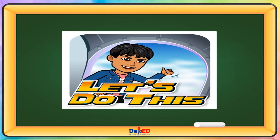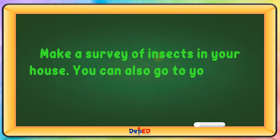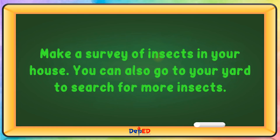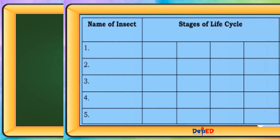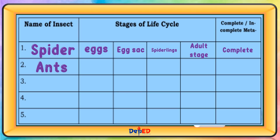Let's do this! Make a survey of insects in your house. You can also go to your yard to search for more insects. Name of insect: Spider. Stages of life cycle: eggs, egg sac, spiderlings, adult stage. Complete. Name of insect: Ants. Stages of life cycle: eggs, larva, pupa, adult stage. Complete. Name of insect: Ladybug. Stages of life cycle: larva, pupa, adult stage. Complete.